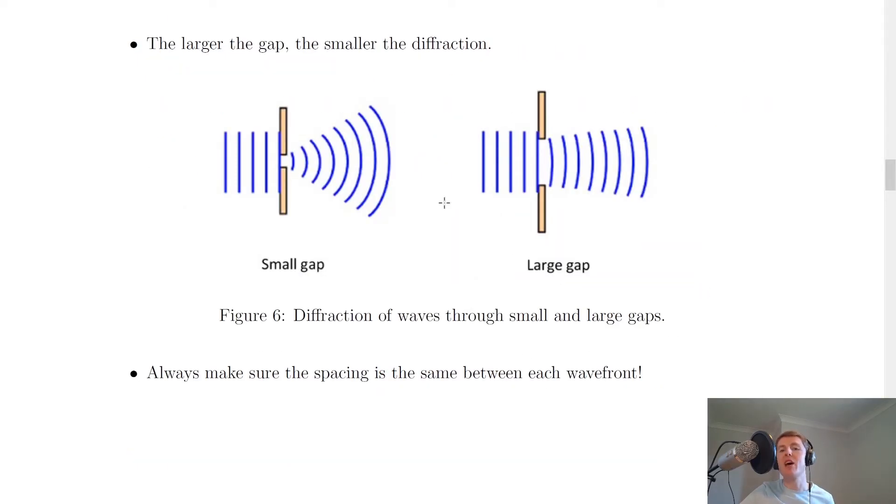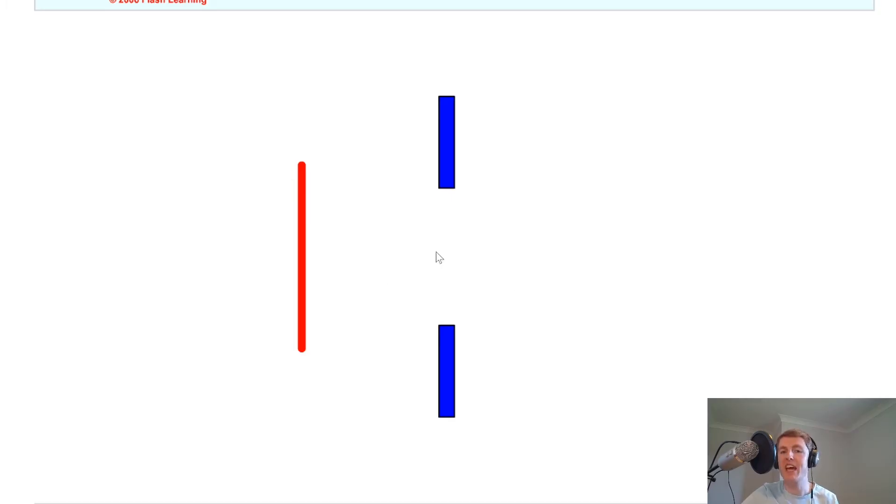The second thing that will affect how much diffraction takes place is how big the gap is. And to visualize this, we can look at this simulation again. And this time we're going to look at how changing the gap size affects it. So the first case is looking at a large gap. So when we've got a large gap, remember this time we're not interested in wavelength, the space between the waves. We're only interested in the gap size and seeing what happens to the bending.